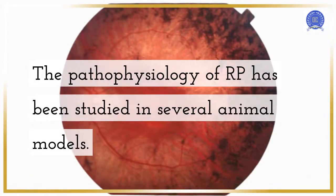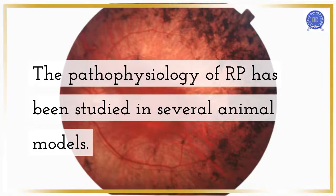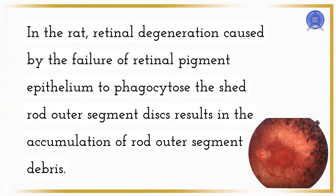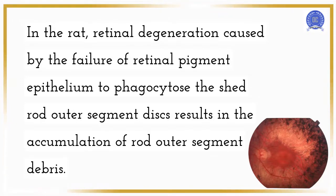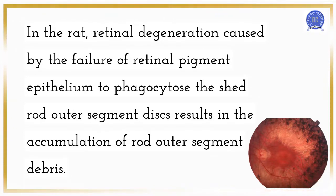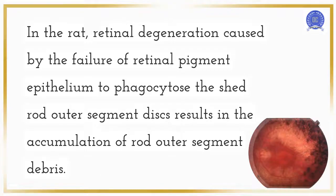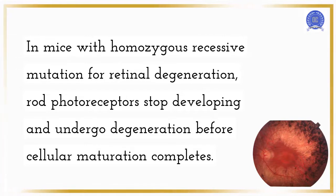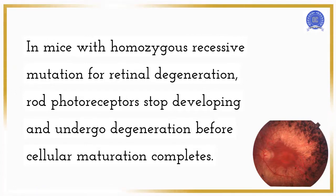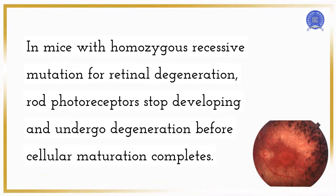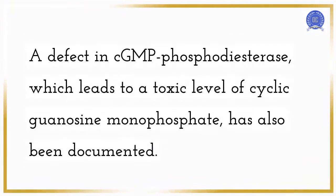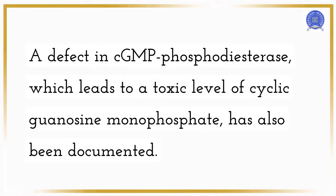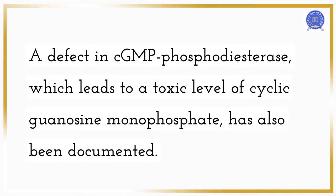The pathophysiology of RP has been studied in several animal models. In the rat, retinal degeneration caused by the failure of retinal pigment epithelium to phagocytose the shed rod-outer segment discs results in the accumulation of rod-outer segment debris. In mice with homozygous recessive mutation for retinal degeneration, rod photoreceptors stop developing and undergo degeneration before cellular maturation completes. A defect in cGMP phosphodiesterase, which leads to a toxic level of cyclic guanosine monophosphate, has also been documented.